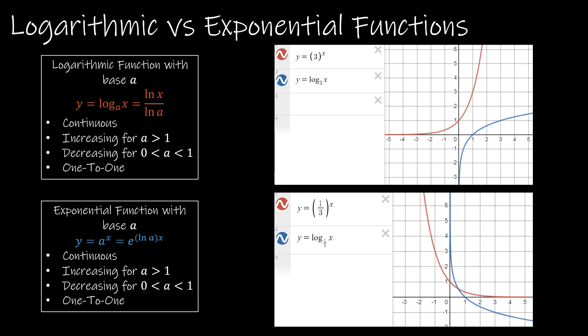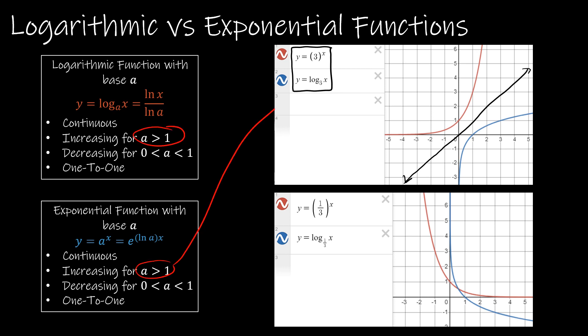We have similar properties for logarithmic and exponential functions where the base is not e. If I have a base of a — say y equals 3 to the x or y equals log base 3 of x — I still end up with the same function reflected across the line y equals x. This applies whether a is greater than one or between zero and one, though it does make a difference in the shape of the graph.